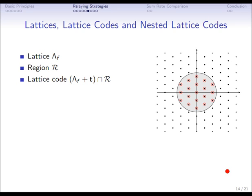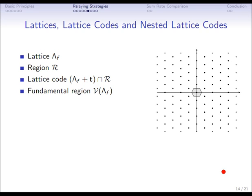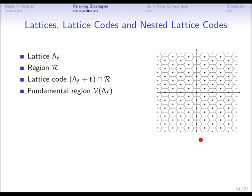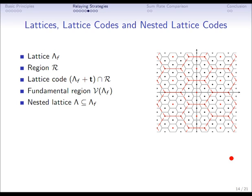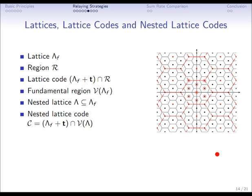But we don't want a lattice code, we want a nested lattice code, so we have to make some further introductions. There is already a region associated with the lattice called the fundamental region. Basically, every point in this region is closer to the innermost lattice point than to all other lattice points. Attaching this region to all lattice points gives us the Voronoi regions. We can then find a nested lattice, which is a sub-lattice of the original lattice. Intersecting the Voronoi region of the nested lattice with the fine (original) lattice gives us the nested lattice code, also called a Voronoi code.